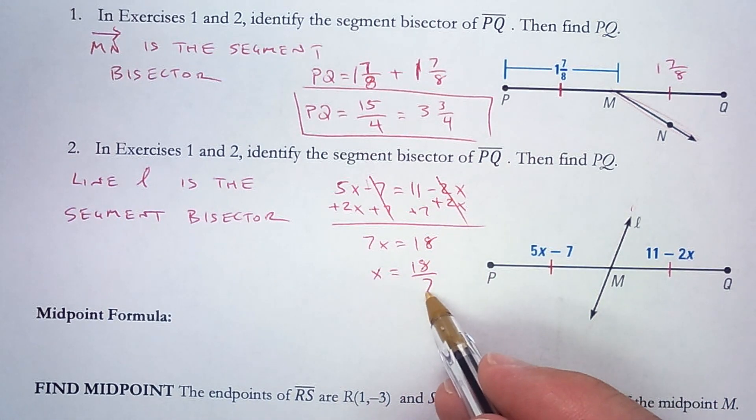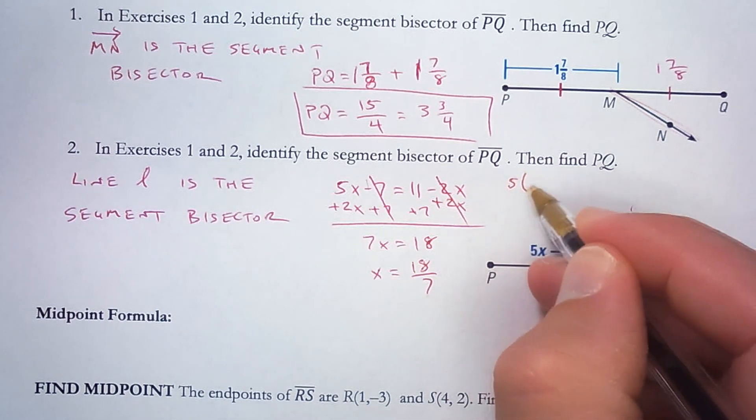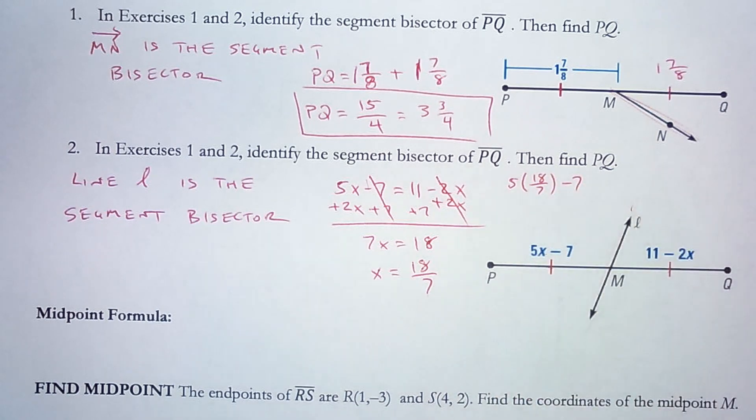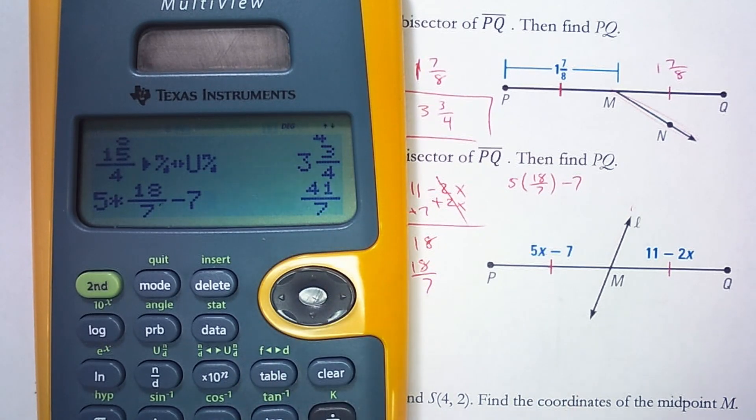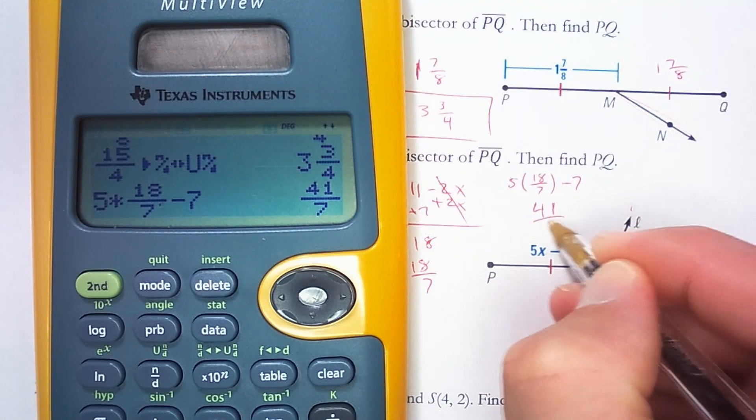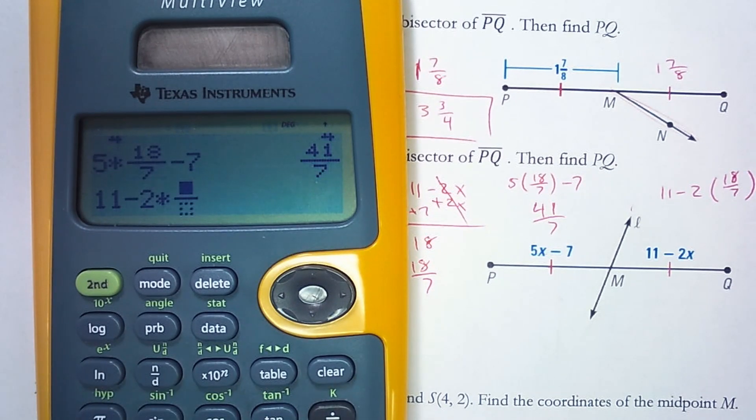Now I really want to leave that improper fraction because I have to use it here in order to find these two lengths. By the way, these two lengths should be the same when I plug in 18 sevenths. So 5 times 18 sevenths minus 7. So 5 times, then I'll use the n over d, 18 over 7 minus 7 is 41 sevenths. Now this side better also be 41 sevenths. 11 minus 2 times 18 over 7 is 41 sevenths. So I know I did this correctly.